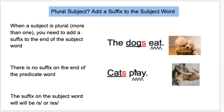Here's another example. Cats play. The subject word is cats because there's more than one cat. I had to add a suffix S to the end of the subject word so that it agrees with the action predicate word, which is play. If I said 'cat play,' that wouldn't make any sense and it wouldn't sound right. Don't forget to add your suffix S or ES to the end of the subject word when the subject is plural.